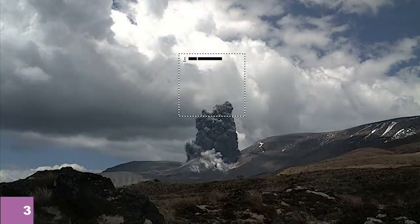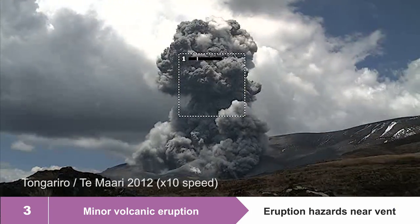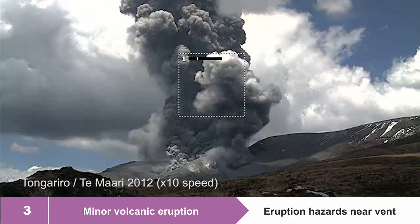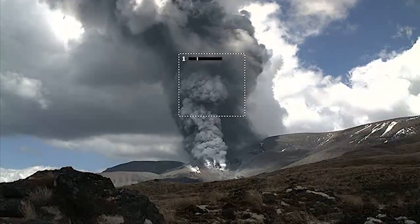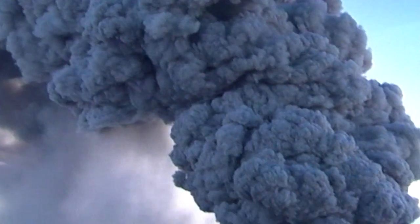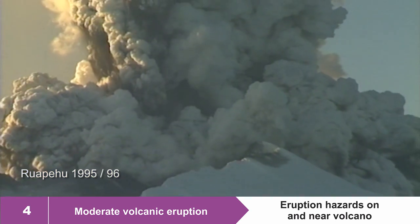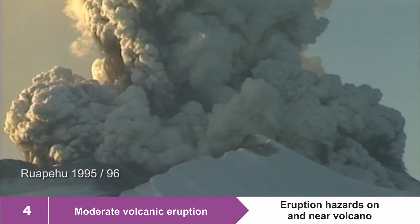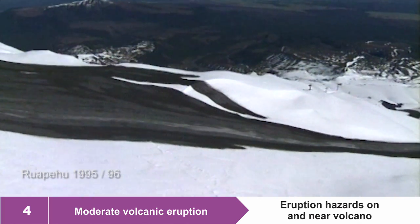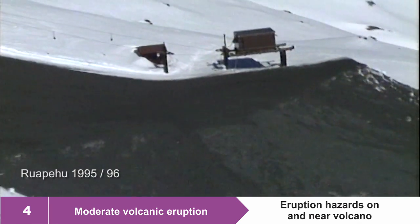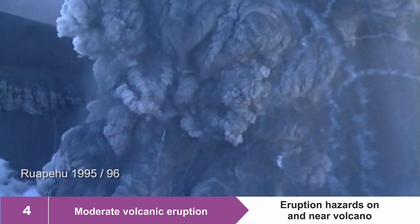Volcanic alert level three is a minor volcanic eruption. Volcanic alert level four is a moderate volcanic eruption, and this is where the hazards extend way beyond the active crater onto the flanks of the volcano and maybe even more distant. There may be lahars, lava flows or debris flows on the flank of the cone, and there may be ballistic blocks being thrown from the crater.